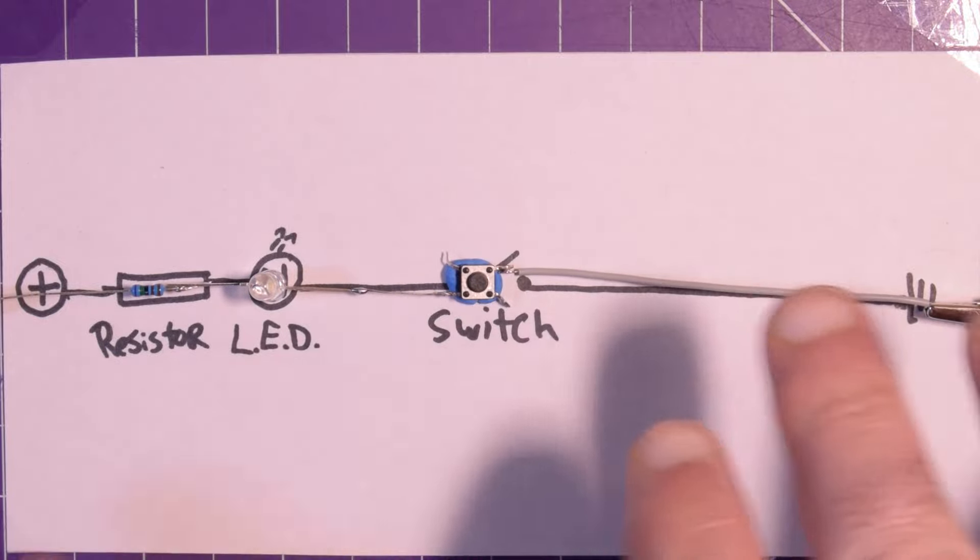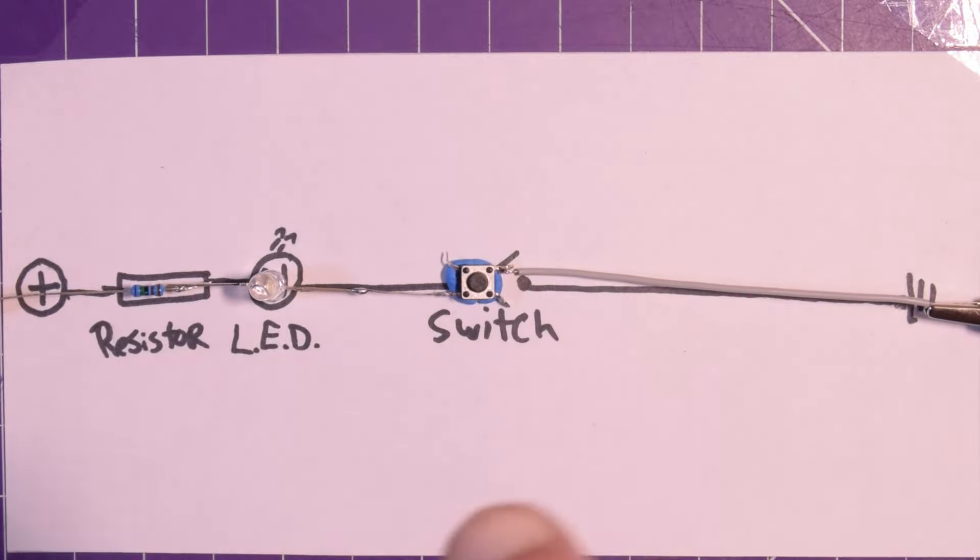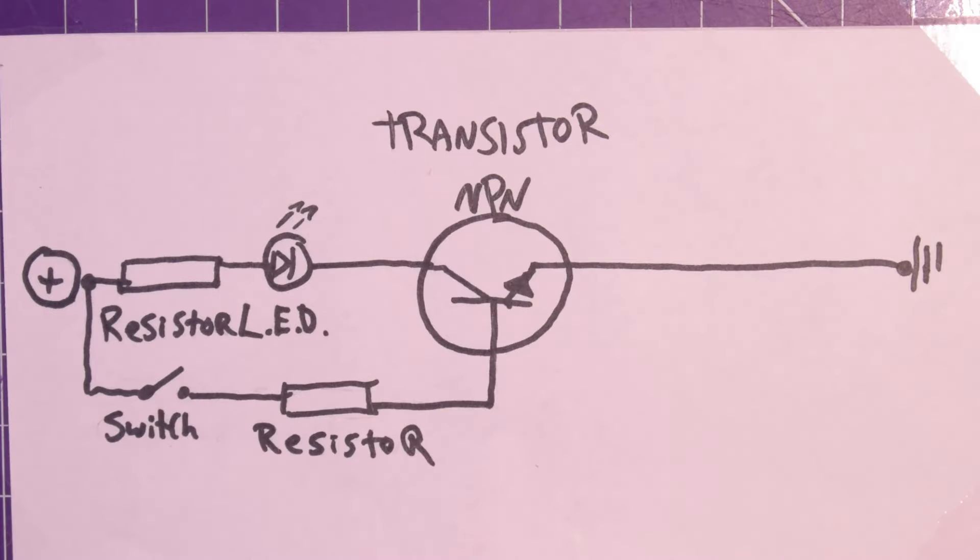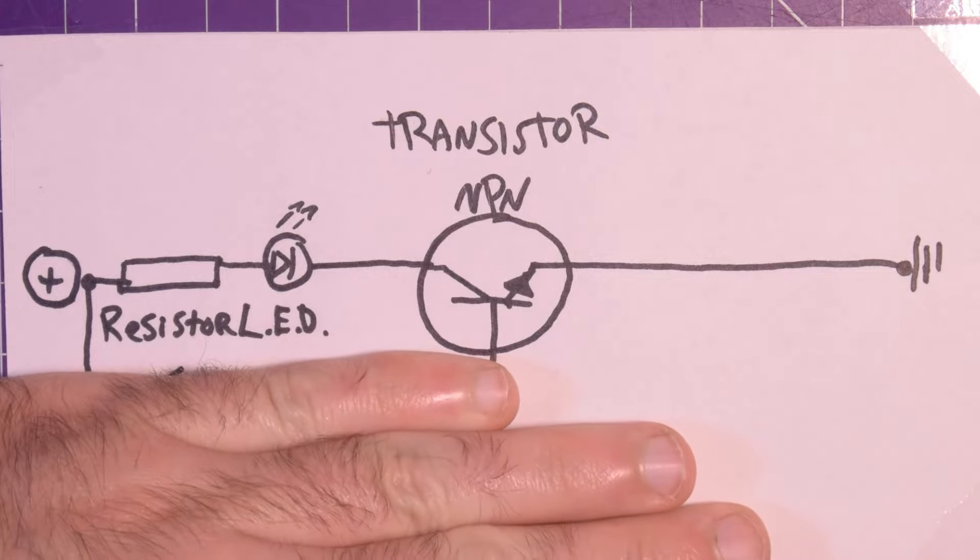So now let's see if we can build the same circuit but with a transistor instead of a switch. This circuit looks a little bit more complex than our previous one, but I want to show you it's exactly the same. So if we hide these components we have the same kind of thing going on here.